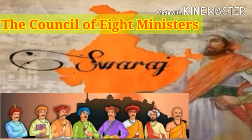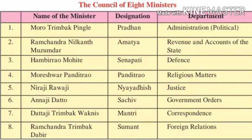Students, the council of eight ministers chart is given here. We will study the name of each minister, their designation, and the department they handled. The first is Moro Trimbak Pingre — designation Pradhan, department Administration. The second is Ramchandra Nilkantha Mujumdar — designation Amatya, department Revenue and Accounts of the State.